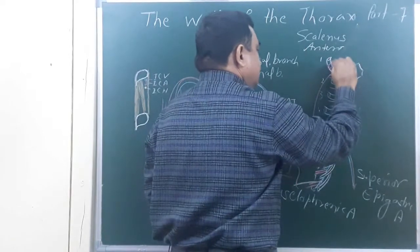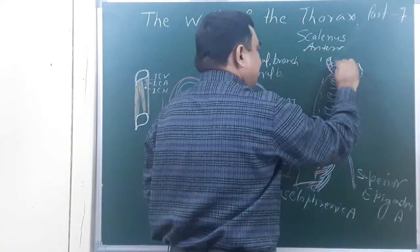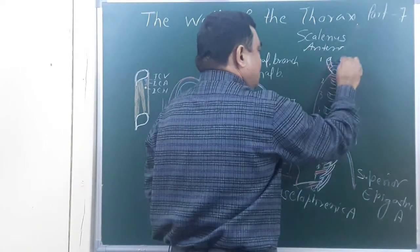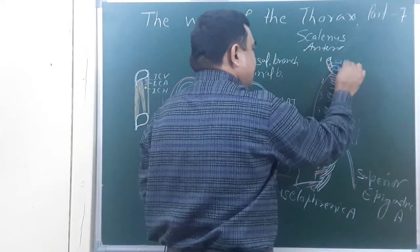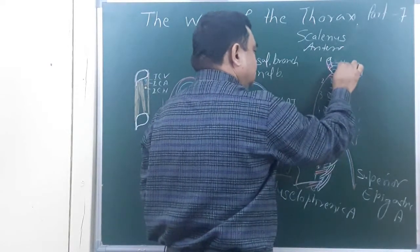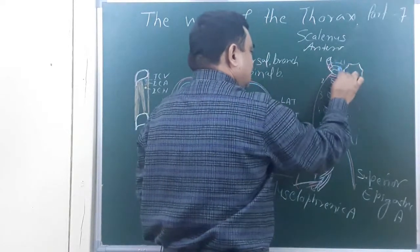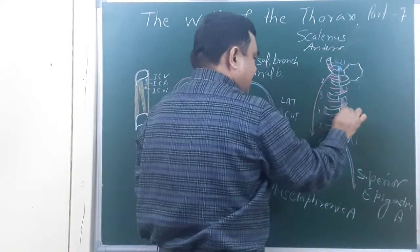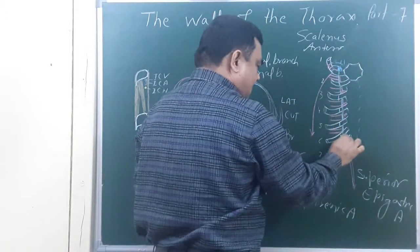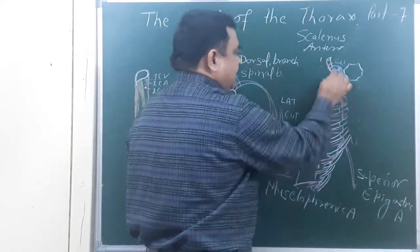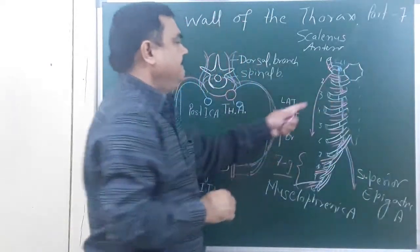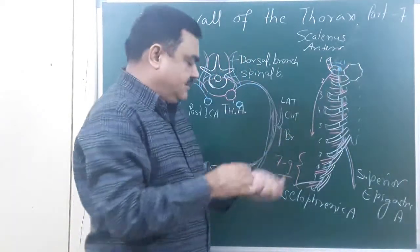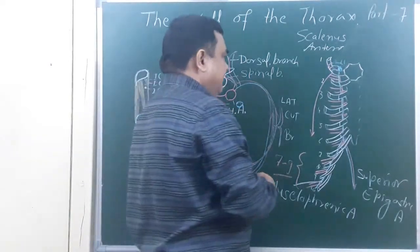Here is the position of the brachiocephalic vein. So the internal thoracic vein drains into the brachiocephalic vein.